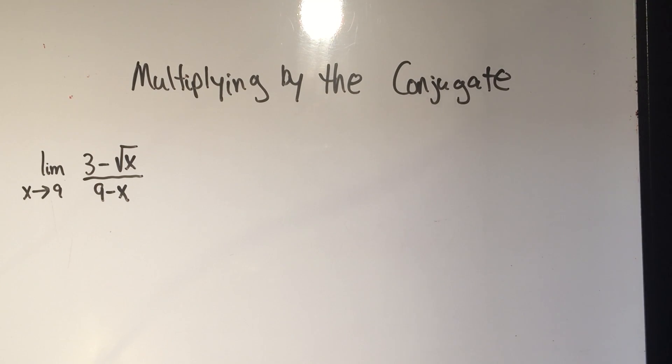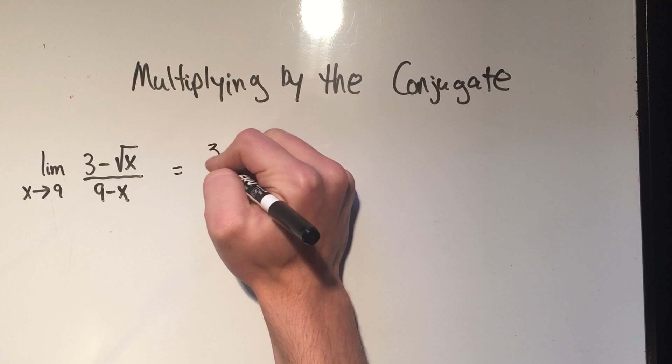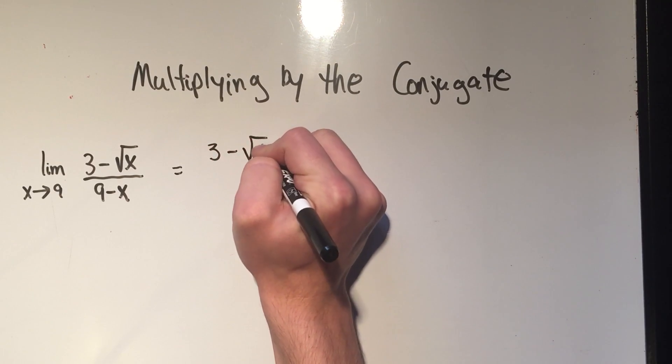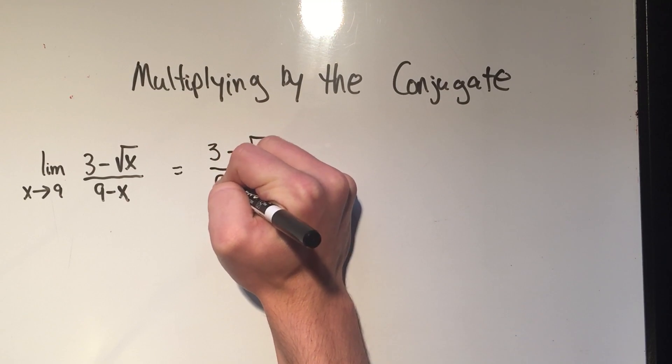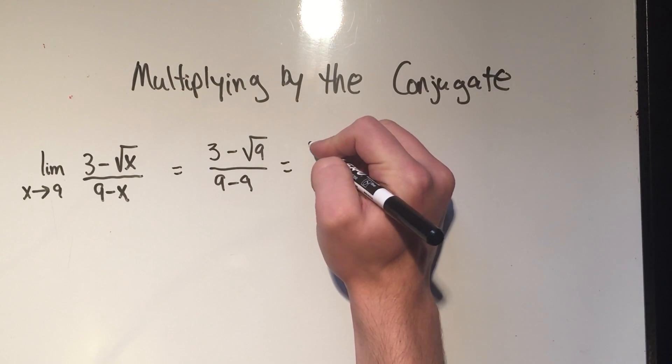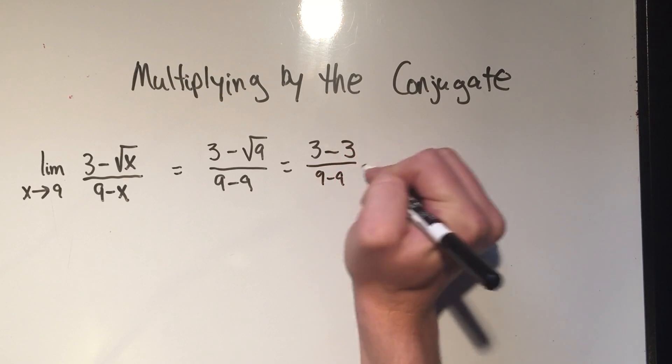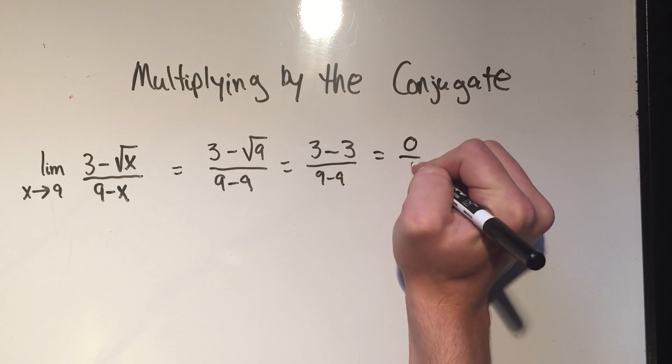Let me show you what happens if you don't multiply by the conjugate. The first thing I do is just plug in the number and see what happens. So if I plug in 9 for x, I'd have 3 minus the square root of 9 over 9 minus 9, and that would be 3 minus 3 over 9 minus 9, which is 0 over 0.